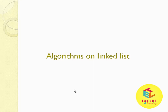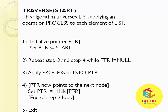Now we will see the algorithms on linked list. The first one is traverse, with one parameter: start. This algorithm traverses the list applying an operation process to each element of the list. Start is the address of the first node of the linked list. Step 1: Initialize the pointer ptr. Step 2: Repeat step 3 and step 4 while ptr is not equal to null. Step 3: Apply process to info of ptr. Step 4: ptr must now point to the next node. Step 5: Exit.